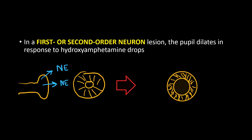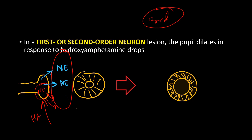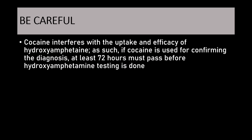In first or second order neuron Horner syndrome, the third order neuron is normal and does have norepinephrine stored. When hydroxyamphetamine is given, norepinephrine is released into the synaptic cleft, sympathetic activity increases, and the pupil dilates. So with hydroxyamphetamine, if you see mydriasis it means the lesion is in the first or second order neuron, not the third. Important caveat: if cocaine was used previously, wait at least 72 hours before performing hydroxyamphetamine testing, as cocaine interferes with its uptake and efficacy. In painful Horner syndrome, neuroimaging is preferable to waiting for pharmacological testing.